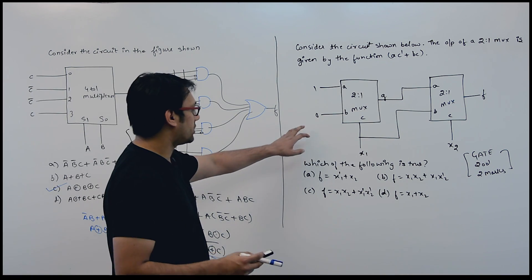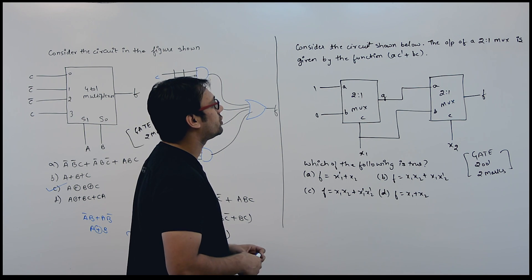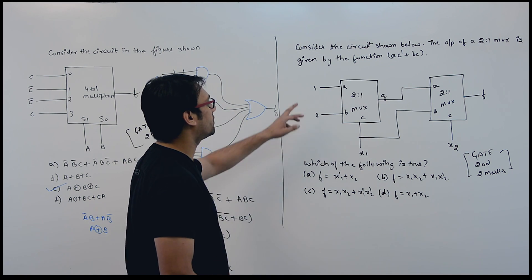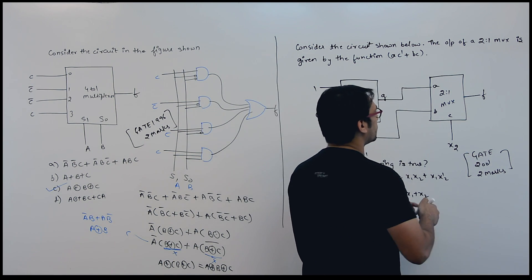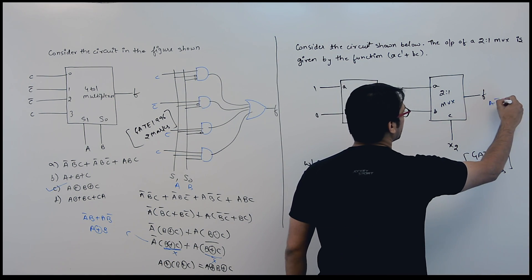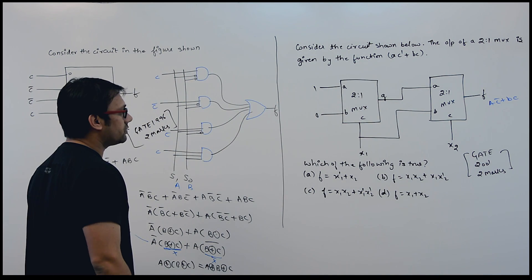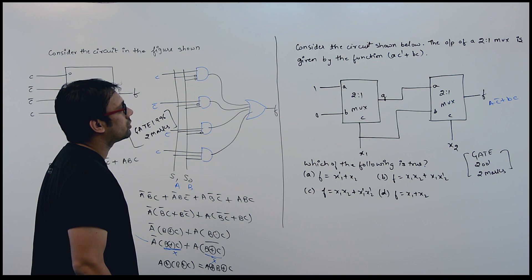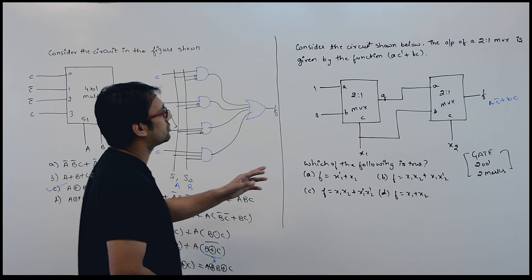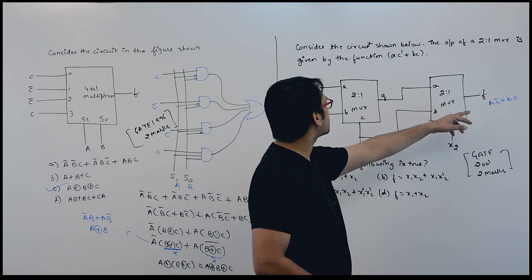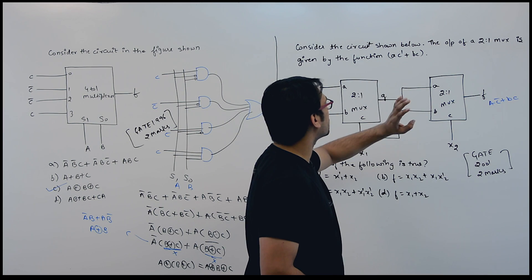Now let us take the second question. In this case, they are saying: consider the circuit shown below. The output of a 2×1 multiplexer is given by the function A C complement plus B C. Which of the following is true?